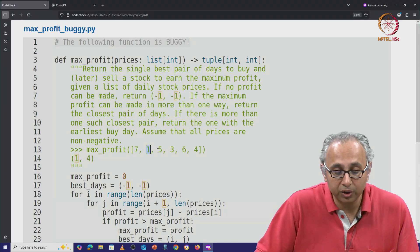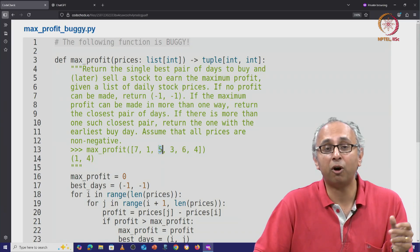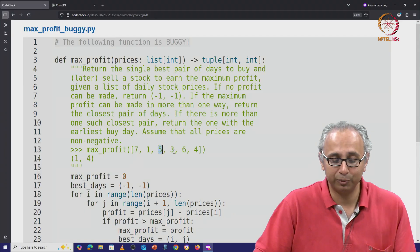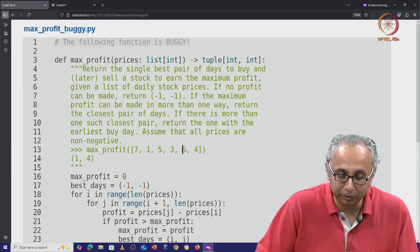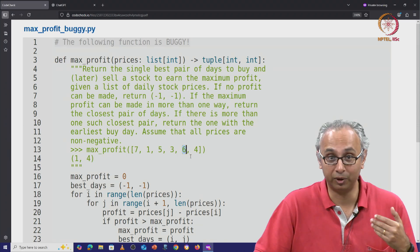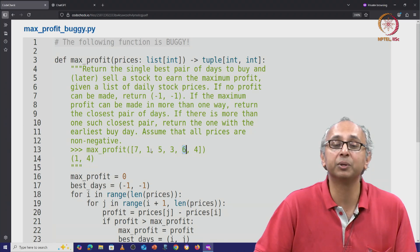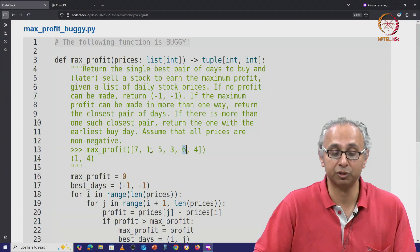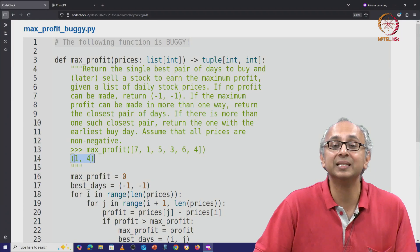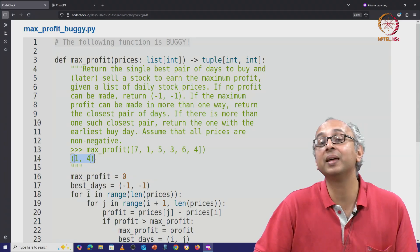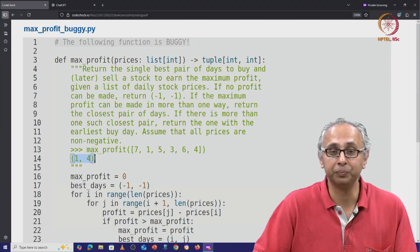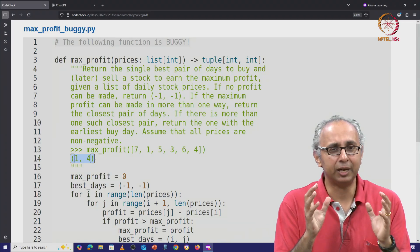Now if we sell it on day 2, we would earn a profit of 5 minus 1 which is 4. But if we hung on to the stock until we reached day 4 then we could sell it for a higher price, 6 units and then of course we would earn 5 units of profit. Which is why for this list of prices the best day to buy and then later sell is buy on day 1, sell on day 4. So I hope you get the general idea.